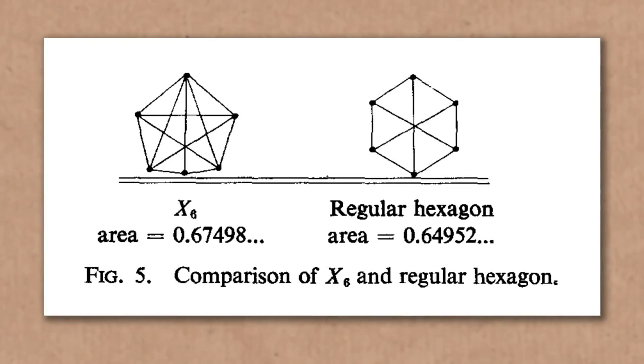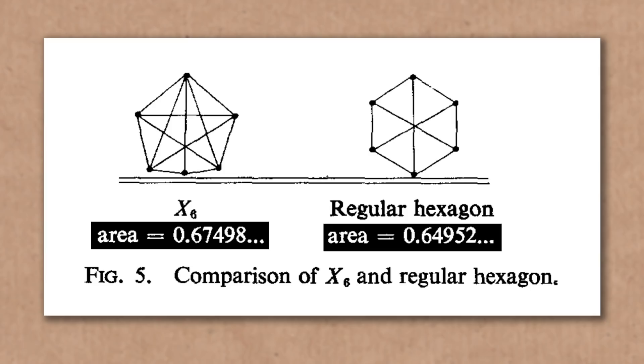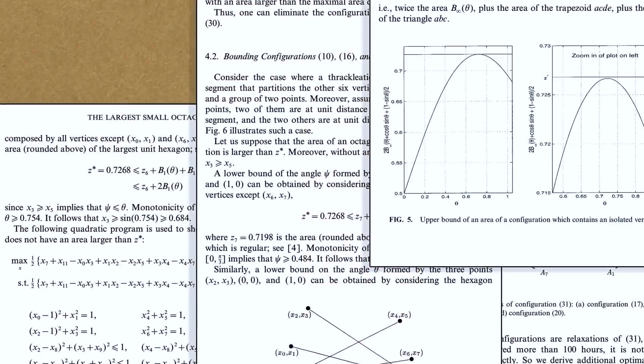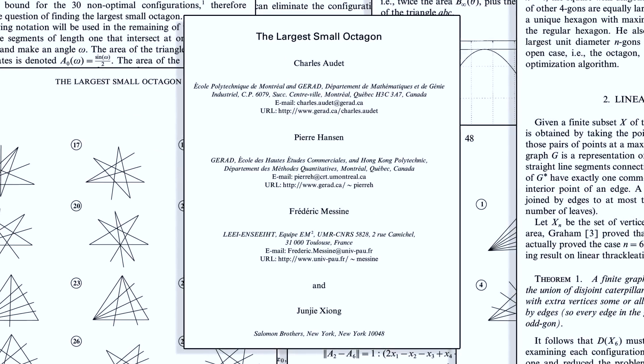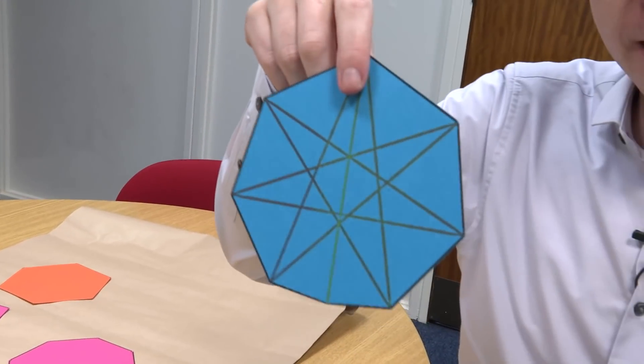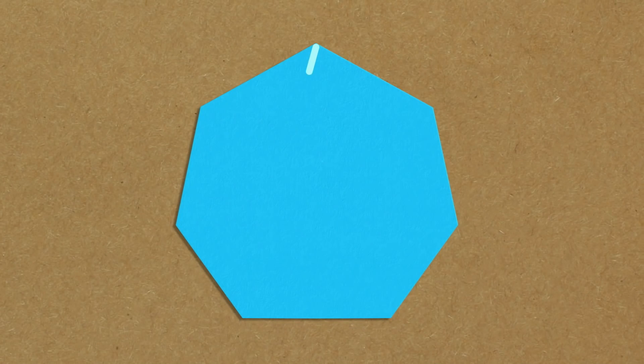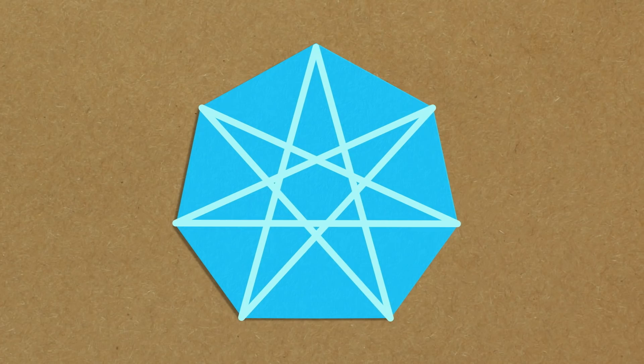Ron Graham then asked: are the other shapes with even numbers of sides constructed the same way? That was his conjecture. We didn't prove it for a long time — the octagon took another 30 years to prove. The octagon isn't the regular octagon, but it is this shape here. It started with a seven-sided shape where all the diagonals have length one, then add one more diagonal and a little extra corner to the bottom. Only recently, in 2007, we were able to prove that for even-sided shapes, this is how you construct the largest small shape.